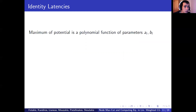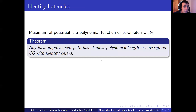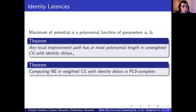The second case we're interested in concerns congestion games with identity latency functions. In this case, any locally improving sequence must make at most polynomially many steps to find an equilibrium. Indeed, since there is nothing exponential either in the latencies or the players, every path must take at most polynomial steps to end. However, this is not true for the weighted case, since the exponential differences in the weights of the players can allow any such path to go on for an exponential length of time. Indeed, we show that computing Nash equilibrium in weighted congestion games with only identity delays is PLS-complete.